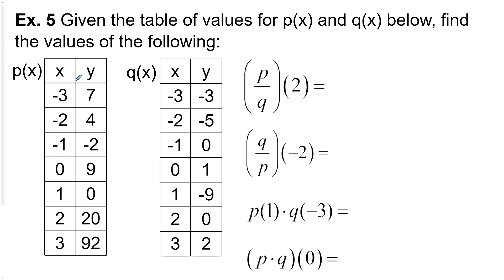Example 5, our functions are now represented with tables. So we have p at 2, which is 20, and q at 2, which is 0. Now 20 divided by 0, we'll put that in quotations because that can't happen. This is undefined. Next one is q at negative 2, negative 5, divided by p at negative 2, which is 4. Next one, p at 1, which is 0, times negative 3, and that equals 0. And last, p at 0 is 9, and q at 0 is 1, 9 times 1 is 9.